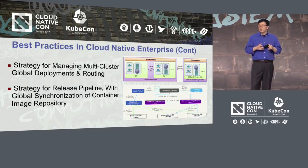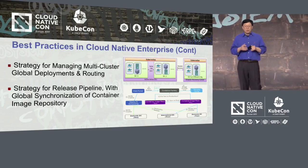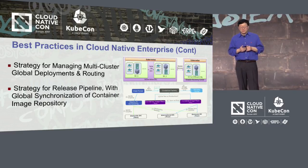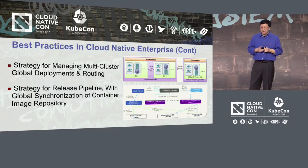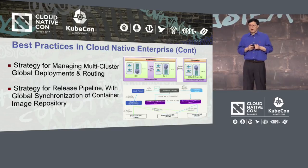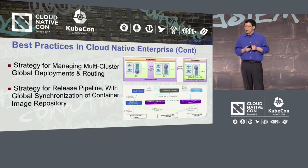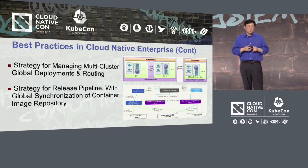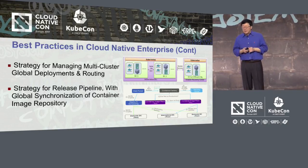Additionally, in most cases you will run multiple clusters in your production environment, so having a global cluster management strategy is critical to your cloud native enterprise. Thanks to the Kubernetes federation project, that makes things much easier to manage across multiple clusters, but there are still many things to be done. One thing we did is build a peer-to-peer algorithm to synchronize container images across eight data centers, which helped us reduce deployment times from a week down to minutes.